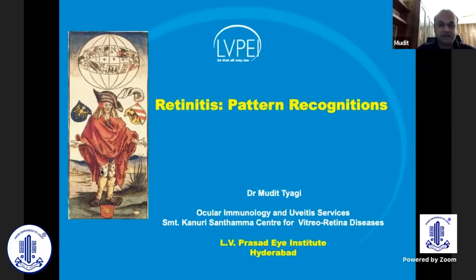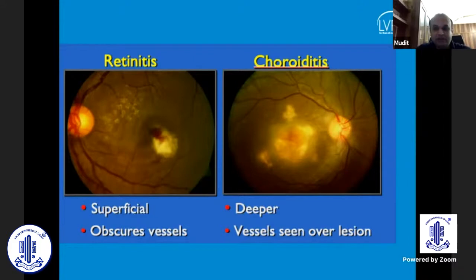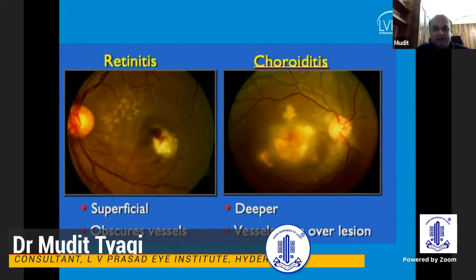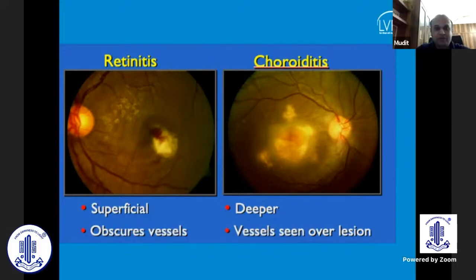Good evening. First of all, thanks for organizing this great session. The topic I will be dwelling upon in the next few minutes is about pattern recognition. A lot of times in infective retinal involvement or infective uveitis, there is a characteristic pattern. If you get into the habit of discerning or identifying this pattern, a lot of entities can be diagnosed based on your clinical acumen and clinical examination. You will need the help of some laboratory investigations, but developing a habit of good pattern recognition will help you approach these in a more focused, strategic, and organized manner.